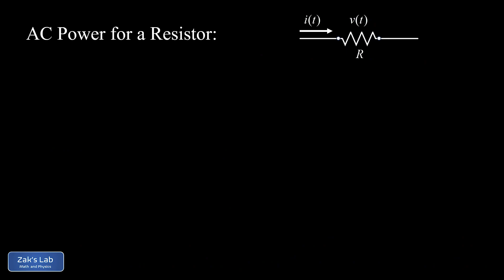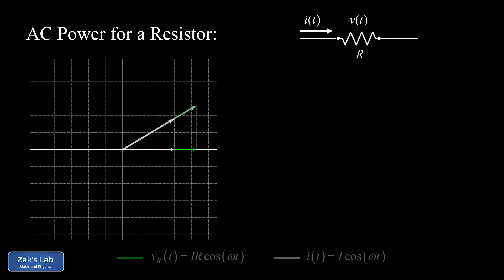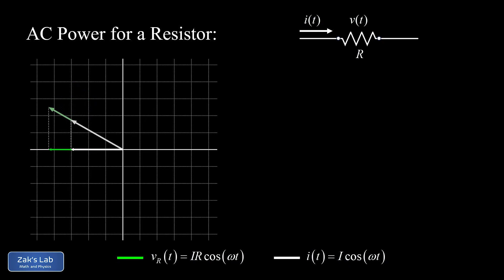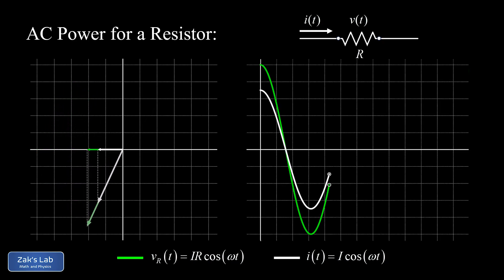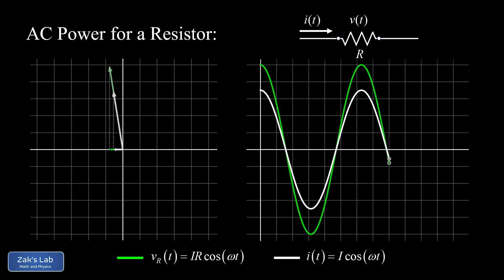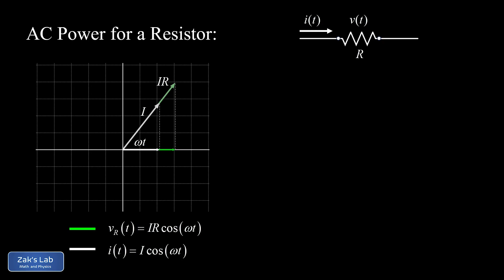For the resistor, we have a voltage v(t) across it and a current i(t) through it — both sinusoidal functions because this resistor lives in an AC circuit. We already know the voltage for a resistor is in phase with the current. The phasor diagram shows the voltage phasor aligned perfectly with the current phasor. Taking horizontal projections, the current is I·cos(ωt) and the resistor voltage is IR·cos(ωt), where IR is the voltage amplitude.